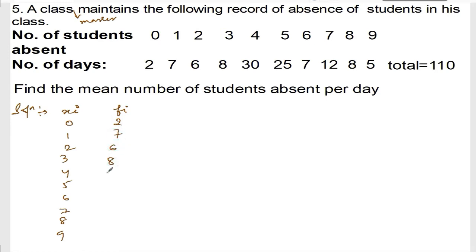Now we write down fi xi. So 0 times 2 is 0, 1 times 7 is 7, 2 times 6 is 12, 3 times 8 is 24, 4 times 30 is 120, 5 times 25 is 125, 6 times 7 is 42, 7 times 12 is 84, 8 times 8 is 64, 9 times 5 is 45.